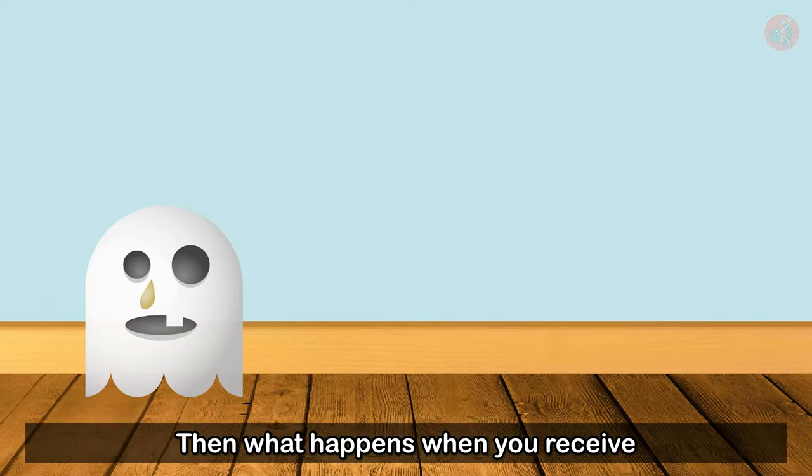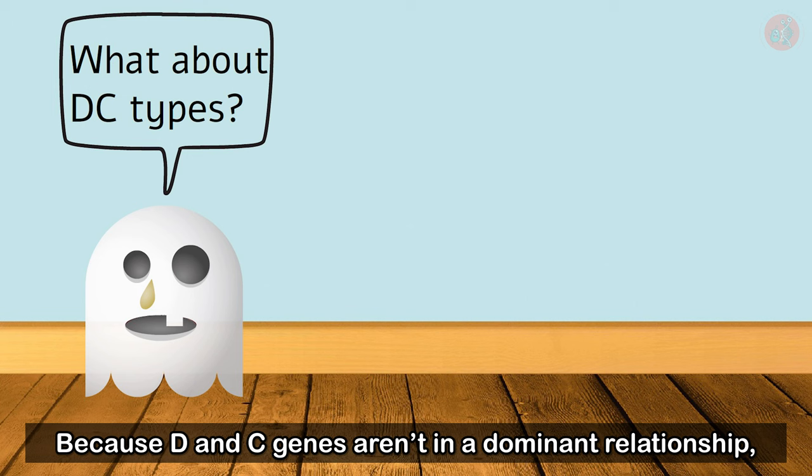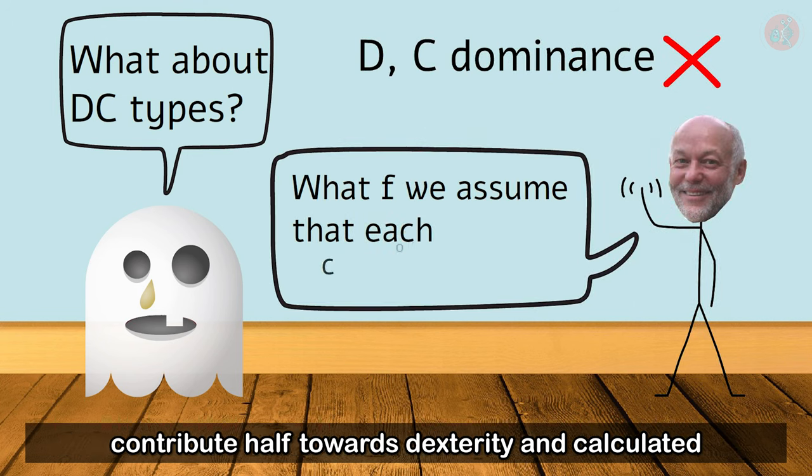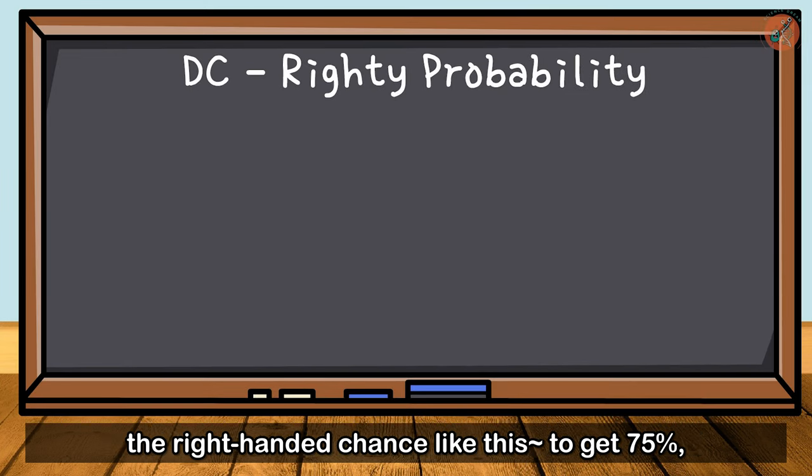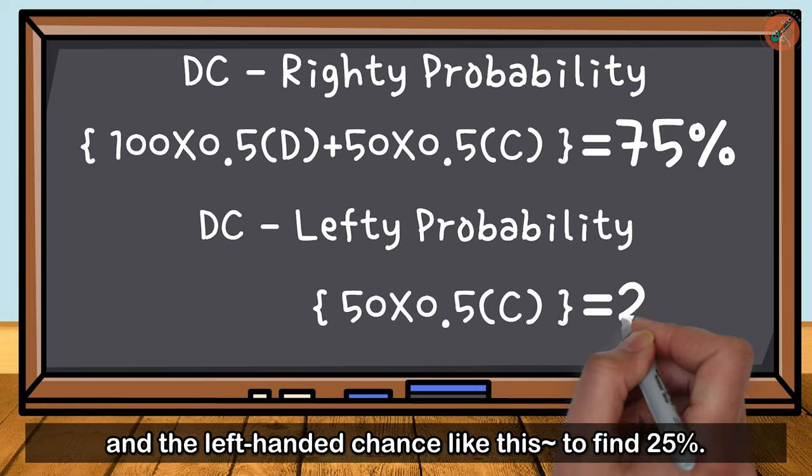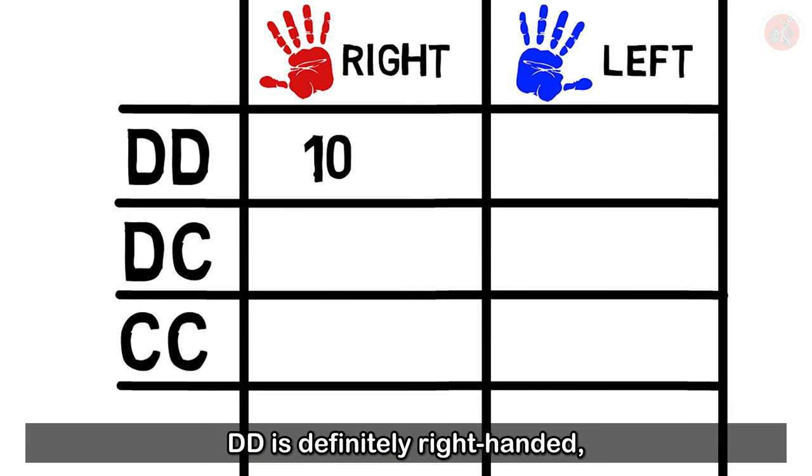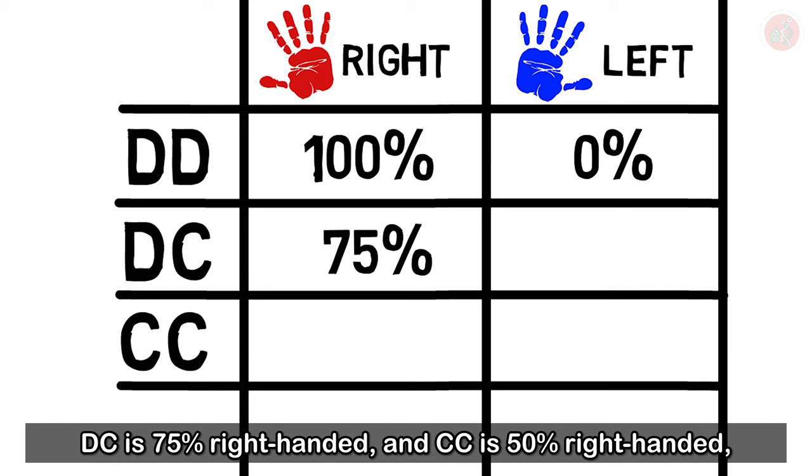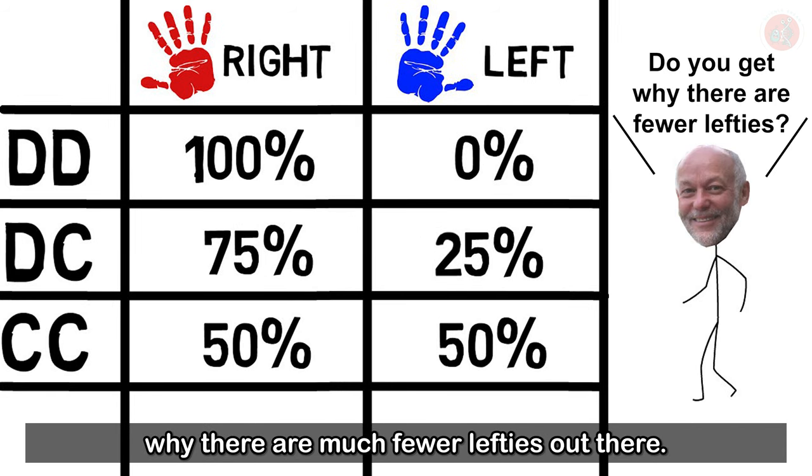Then what happens when you receive one D gene and one C gene from each of your parents? Because D and C genes aren't in a dominant relationship, Professor McManus assumed that each would contribute half towards dexterity and calculated the right-handed chance to get 75%, and the left-handed chance to find 25%. Using this calculation method, DD is definitely right-handed, DC is 75% right-handed, and CC is 50% right-handed, which genetically explains why there are much fewer lefties out there.